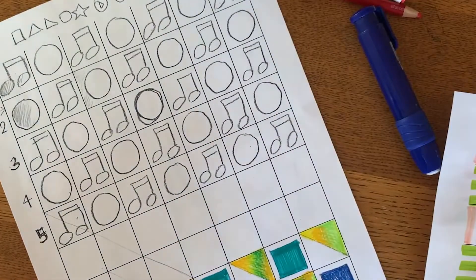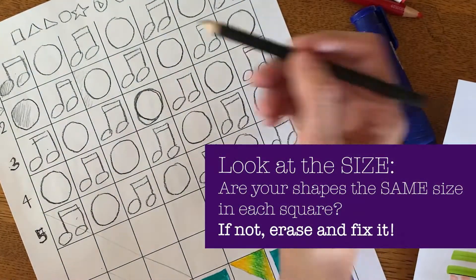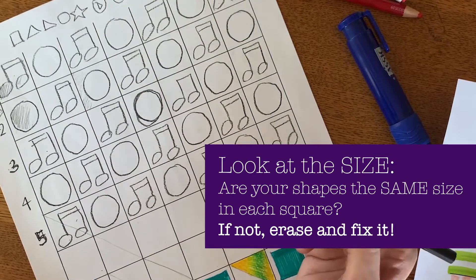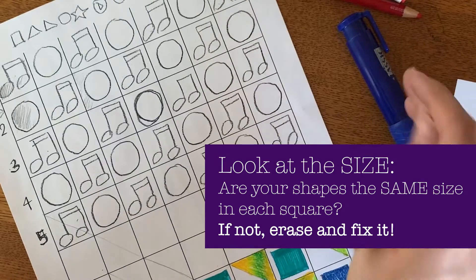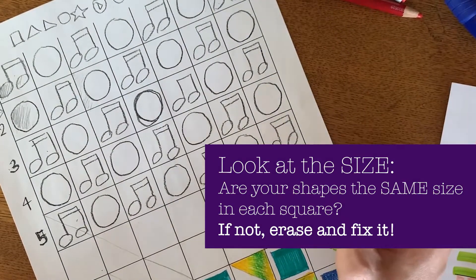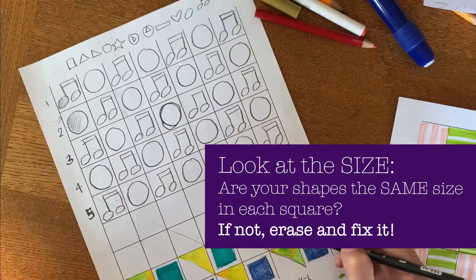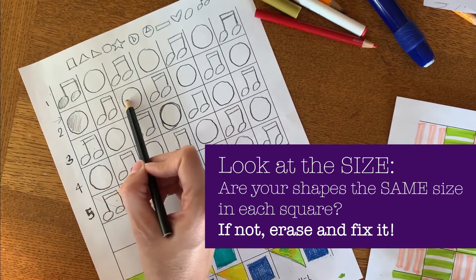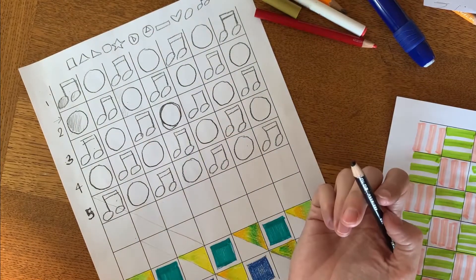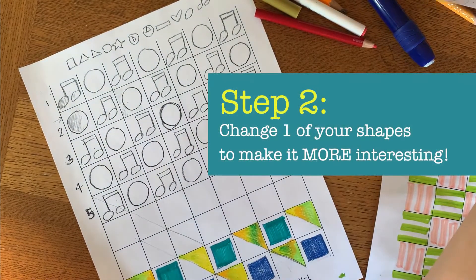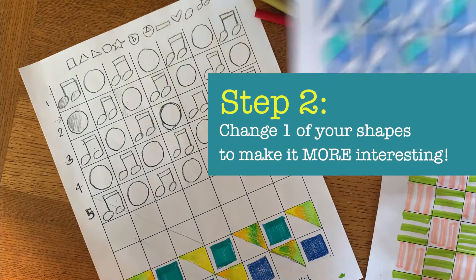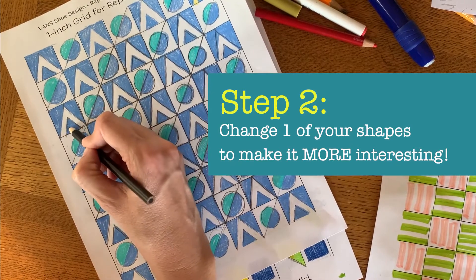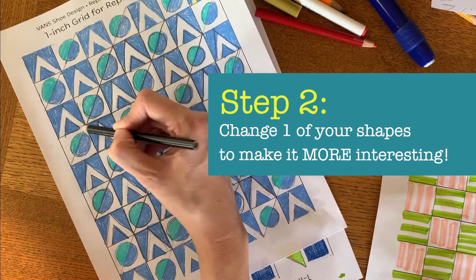So go ahead and choose your two shapes, draw them in here, pay very close attention to the size, make sure it is consistent. And as you go, as you get closer to the bottom, you are going to think about one way that you could change the shape to make it a little bit more interesting. So with the, for example, with the triangle, we added a smaller triangle inside of it. With a circle, he added a line through it.